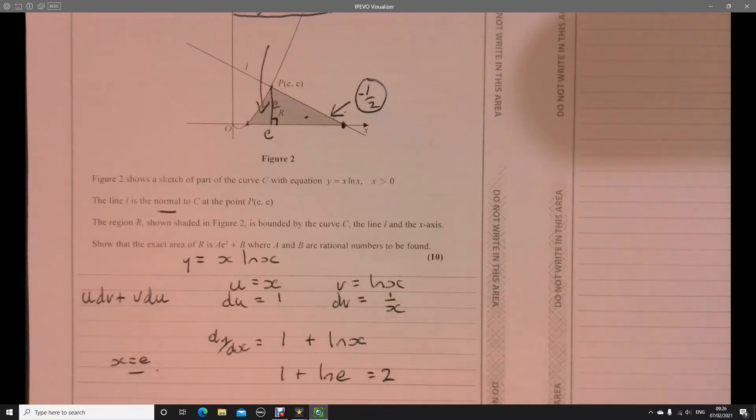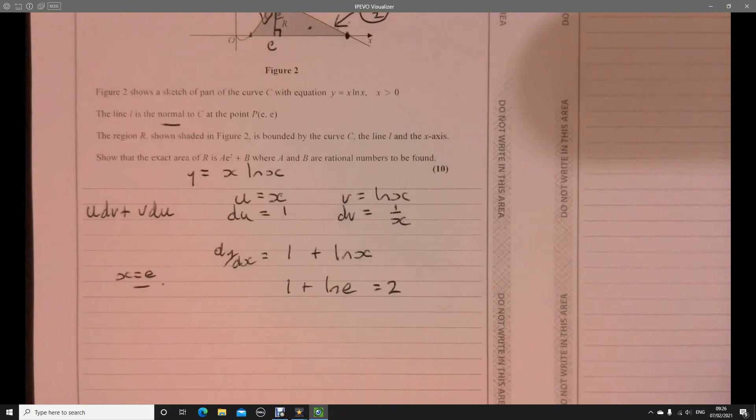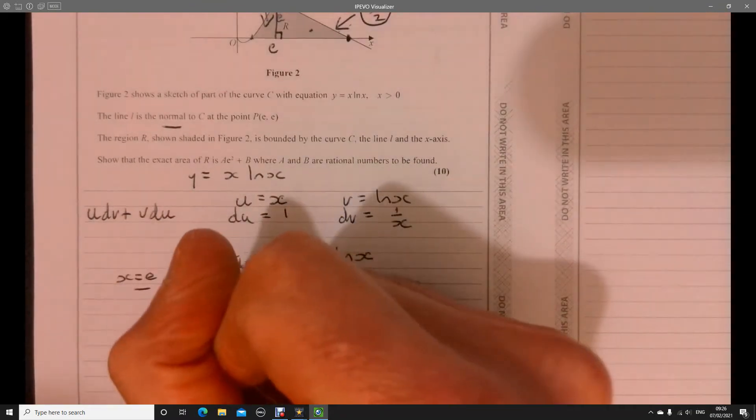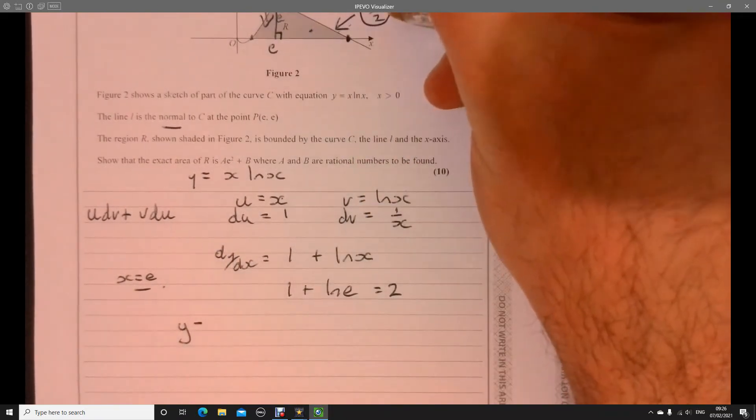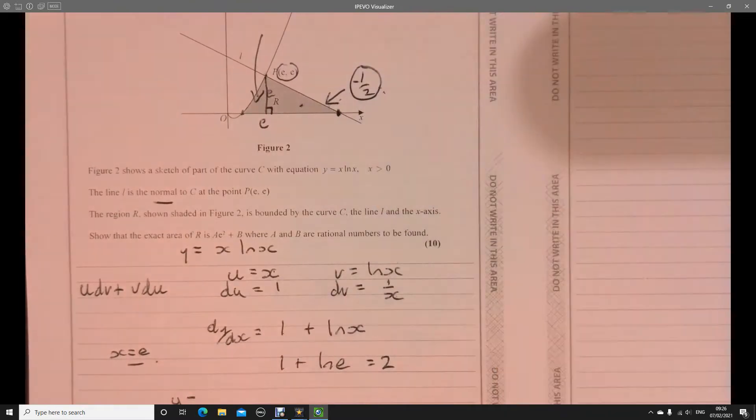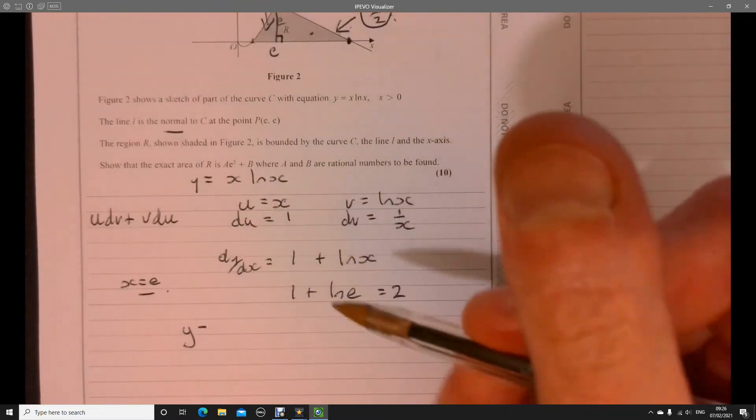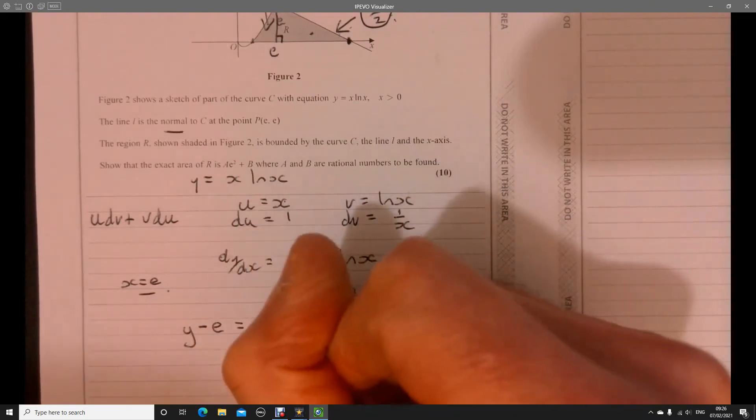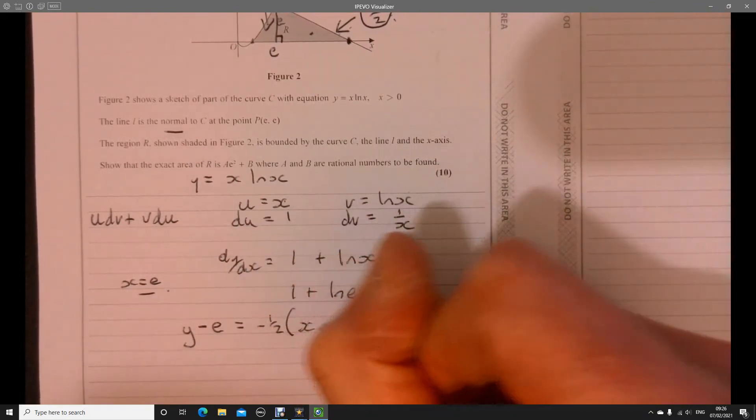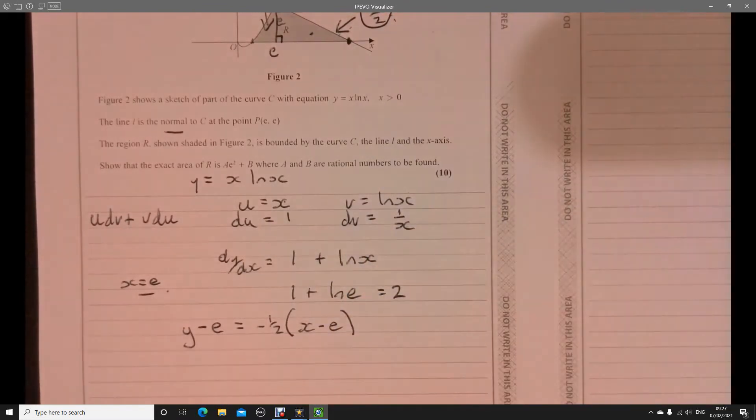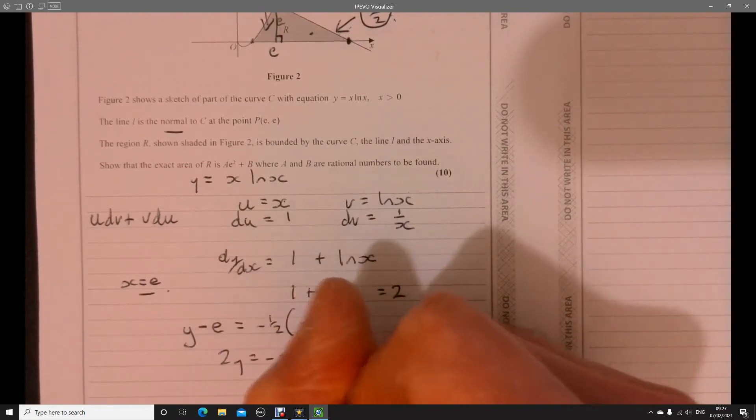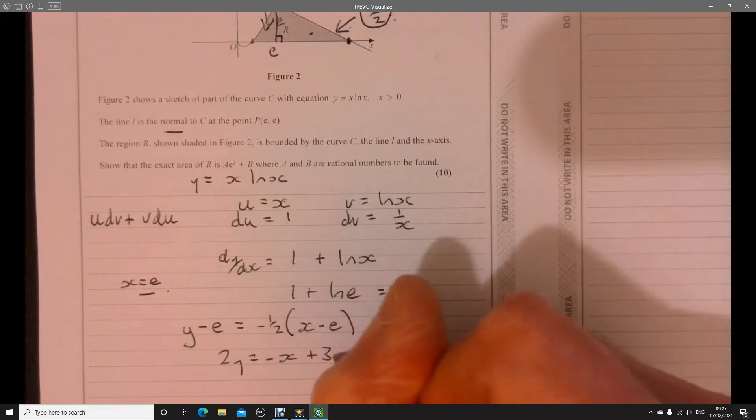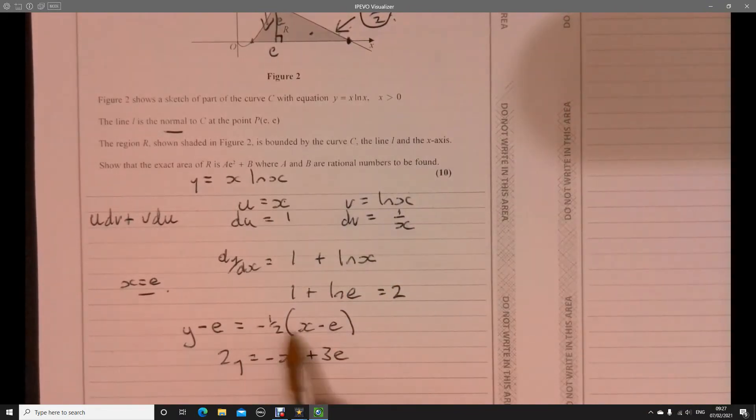So what's the equation of that line? So the equation of that line is going to be, so we've got y minus our y. So we've got a coordinate and we've got a gradient of that line. So if we just feed those into the equation of a straight line, we've got y minus E equals minus a half times x minus E. Just tidy that up a little bit and we're going to end up with 2y equals minus x plus 3E. OK, multiply both sides by 2 is probably the easiest thing to do there.